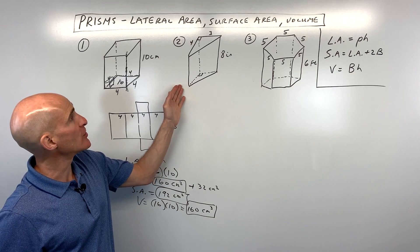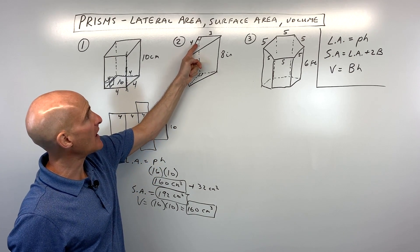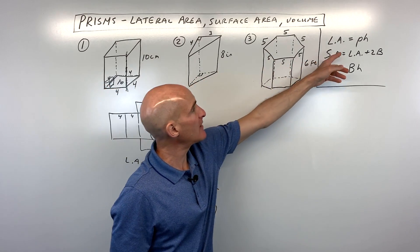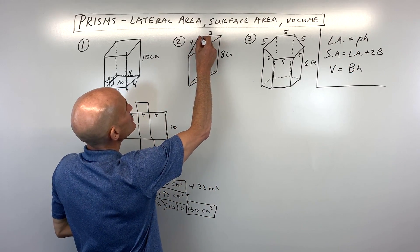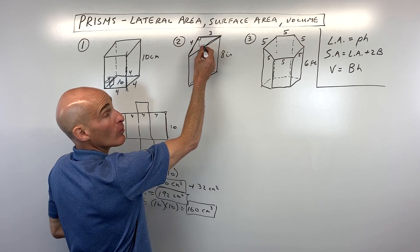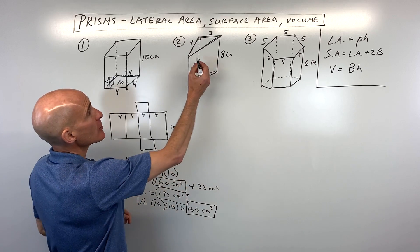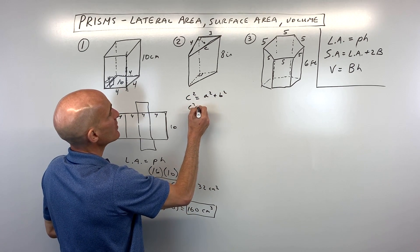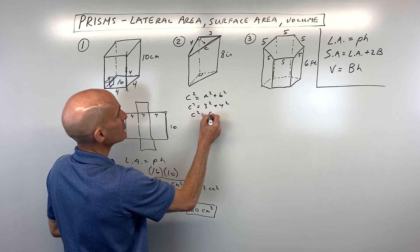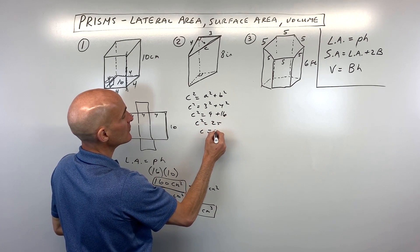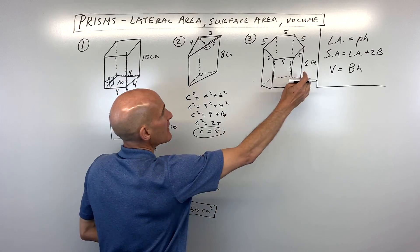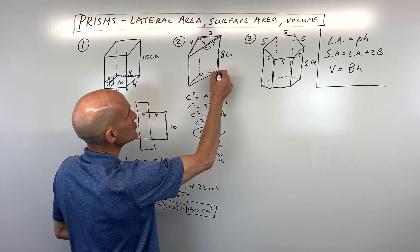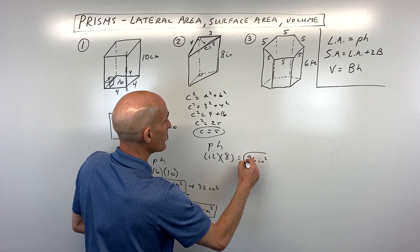Now let's go to number two — a triangular prism. The top and bottom are triangles. First, find the perimeter of the base times the height. The perimeter goes all the way around the triangle: 3, 4, and we need the hypotenuse. Using the Pythagorean theorem: c squared equals 3 squared plus 4 squared, so c squared equals 9 plus 16, giving c squared equals 25, and c equals 5. The perimeter is 3 plus 4 plus 5, which is 12. Times the height of 8, that's a lateral area of 96 inches squared.